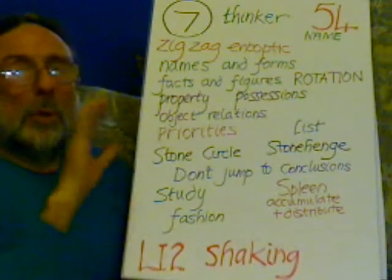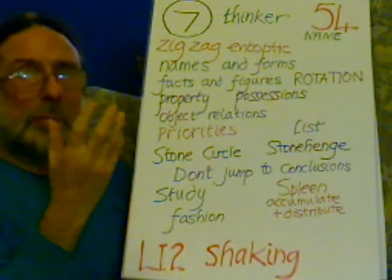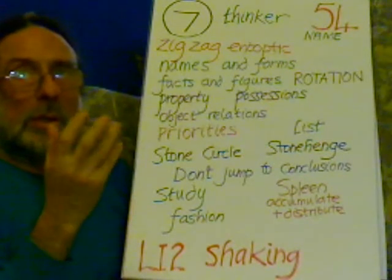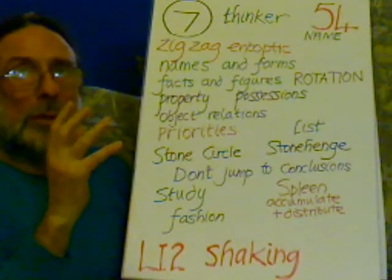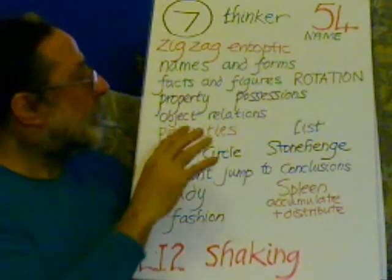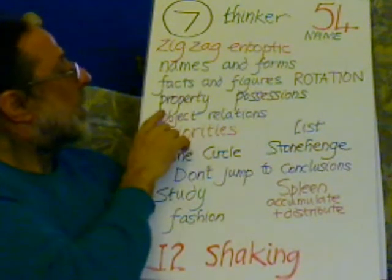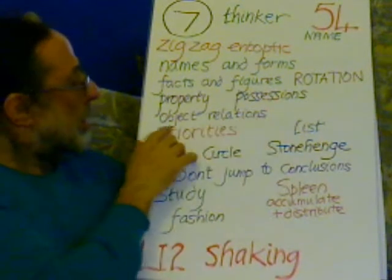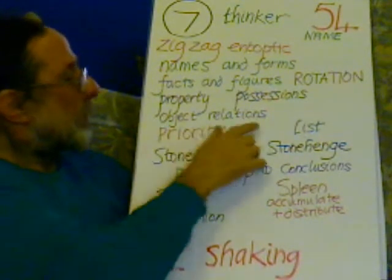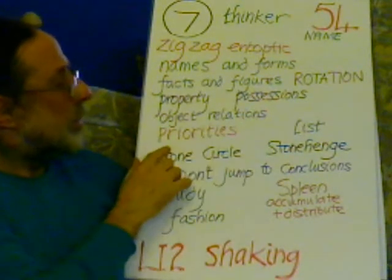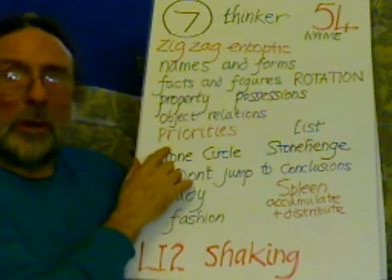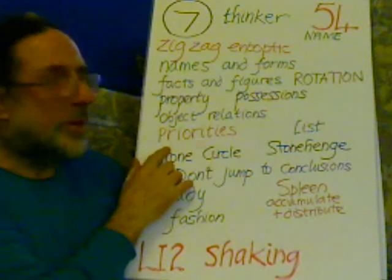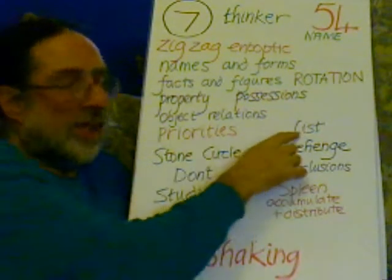This is about the rotation of an object, all the different aspects of it. It is about property and possessions, object relations, which is the priorities — it is about priorities, a list.